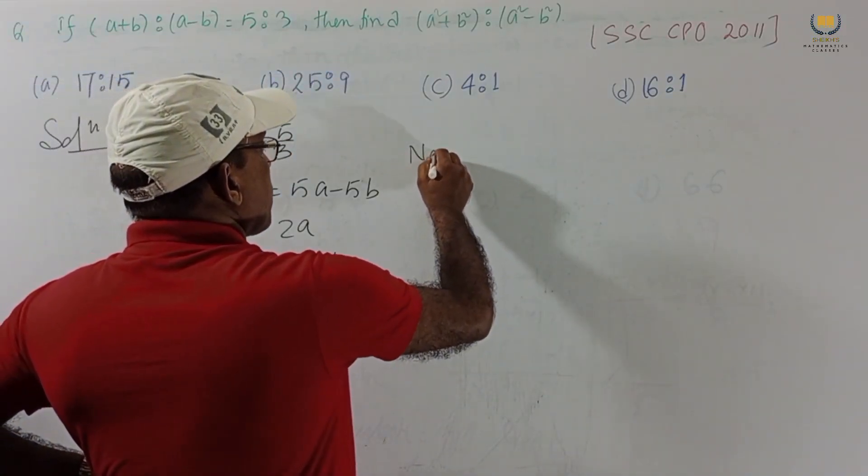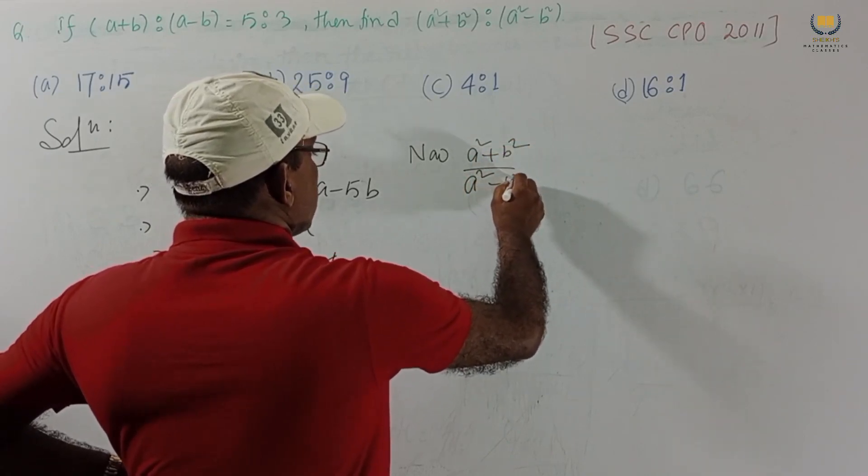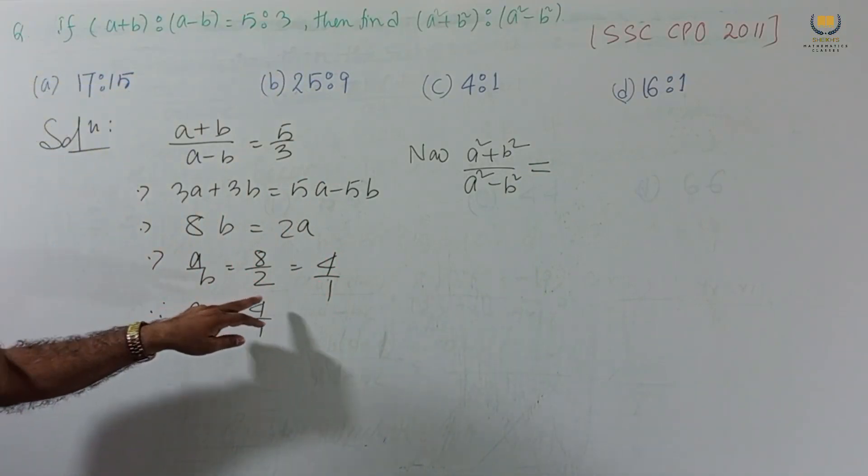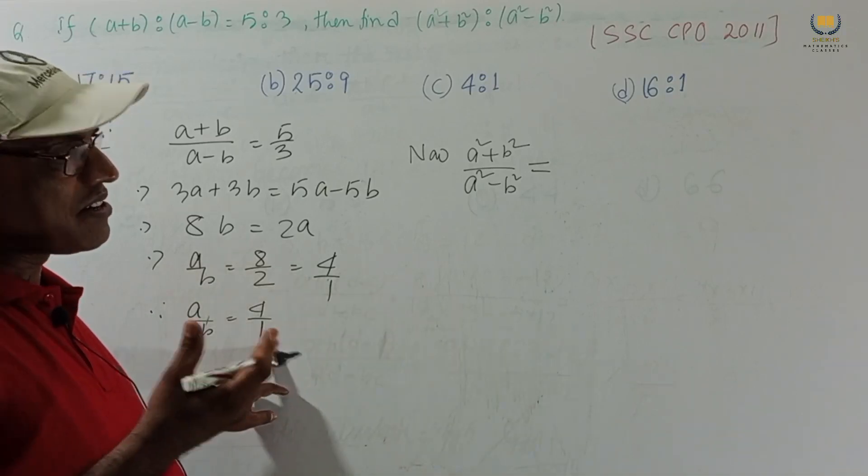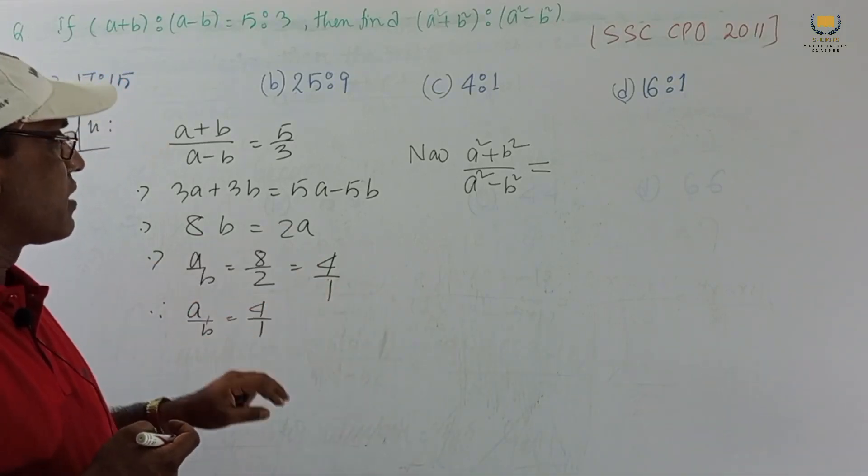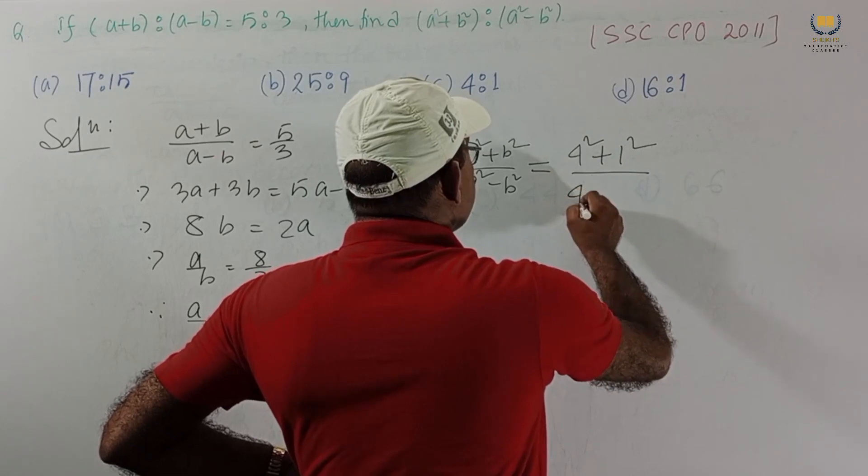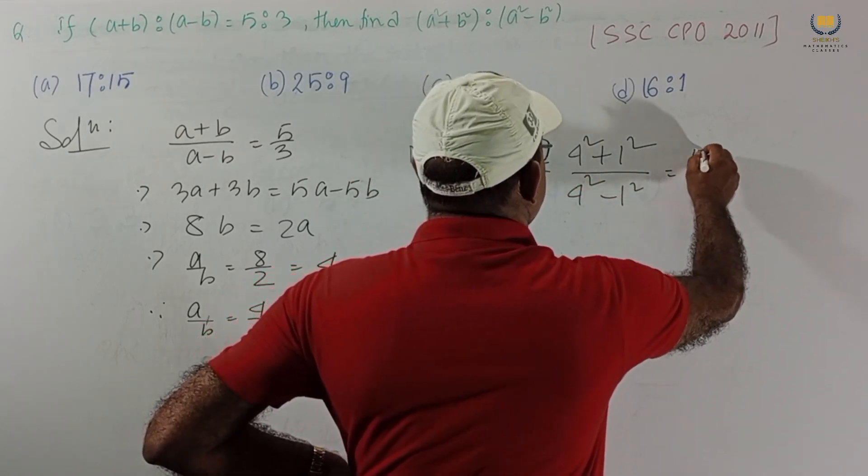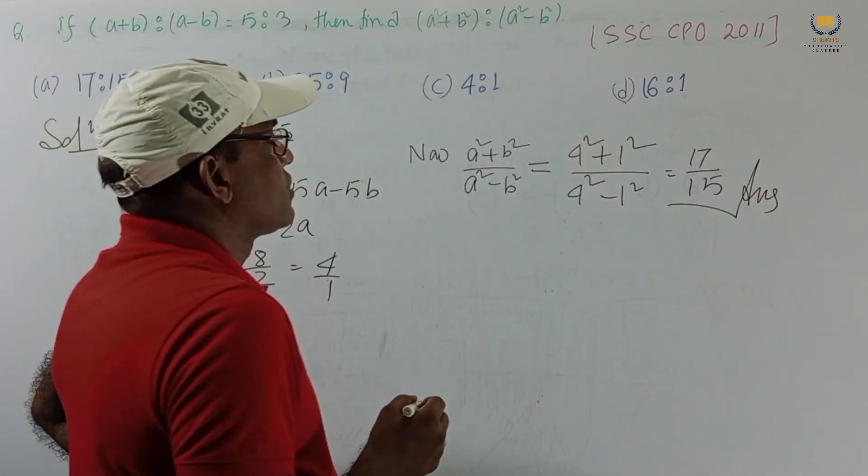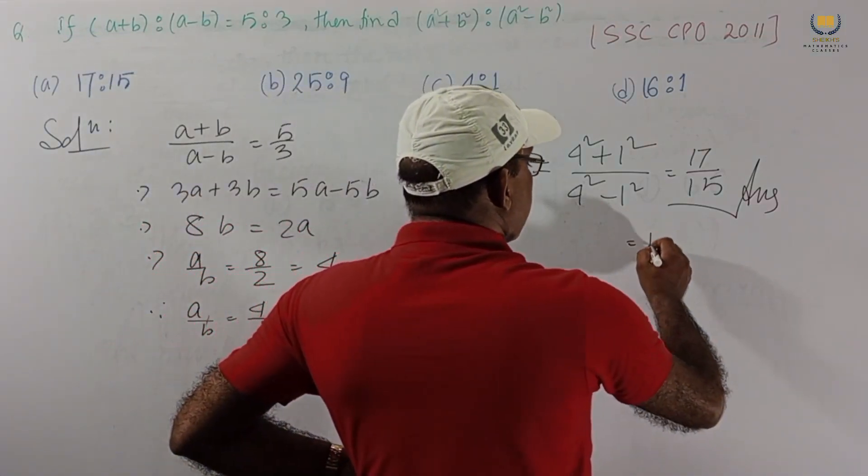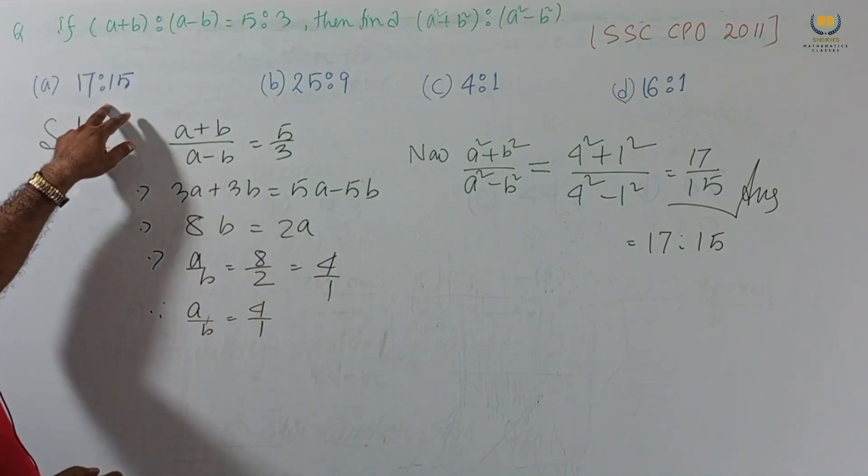But our requirement is this value. (A² + B²)/(A² - B²) equal to - we assume A equal to 4, B equal to 1. Actually you should consider K, but these are objective type exams. Just our requirement is answer. Just A equal to 4, B equal to 1. This is 4² plus 1² by 4² minus 1². This is 16, 17 by 15. And this is our answer. 17 is to 15. Answer is 17:15. Option A is our correct option. Very easy solution.